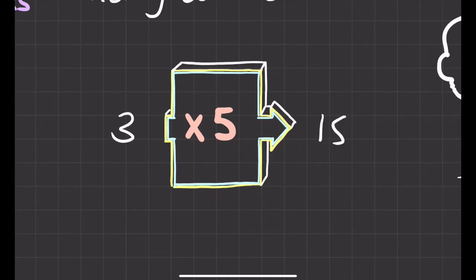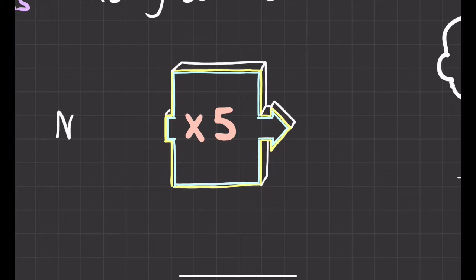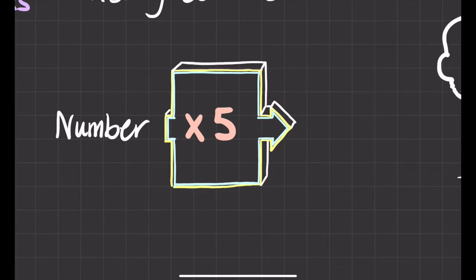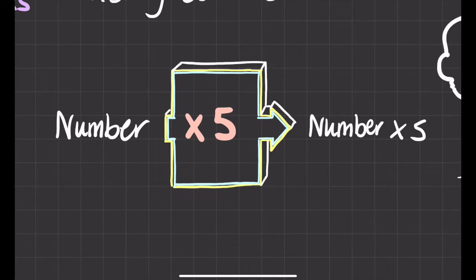We tried a few different numbers and we could get out different answers. But what I could do is say — whatever I put in — a generic number. Let's put in the word 'number' and see what happens. We put it into our function machine, and the function machine says: whatever this number is, you times it by five.